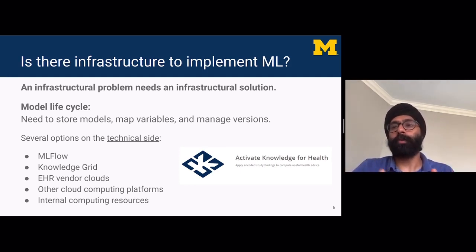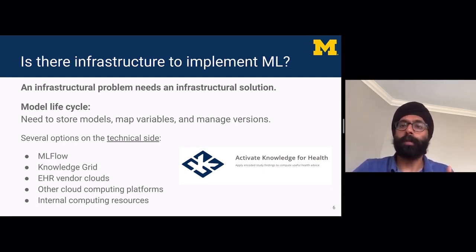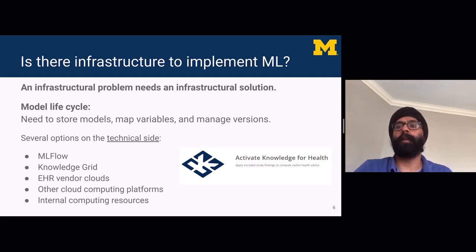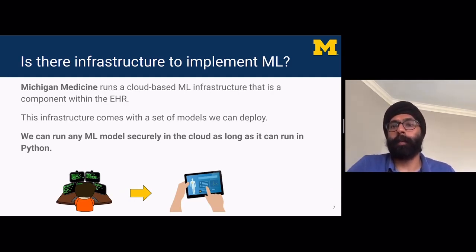Although a lot of what those researchers were asking for were ways to deploy models, implementing machine learning models involves a lot more than just deployment — it involves managing the entire lifecycle of those models. You need to be able to store those models, map the variables, and manage versions. There are several options on the technical side. Examples of open-source mechanisms include MLflow and Knowledge Grid, but there are also electronic health record-based vendor clouds, other cloud computing platforms, and internal computing resources. At our institution, we run a cloud-based machine learning infrastructure that is a component within our electronic health record. We can run any machine learning models securely in the cloud, as long as it can run in Python. R is not on the roadmap for running models, but there are still ways to train models in R and deploy them in Python.